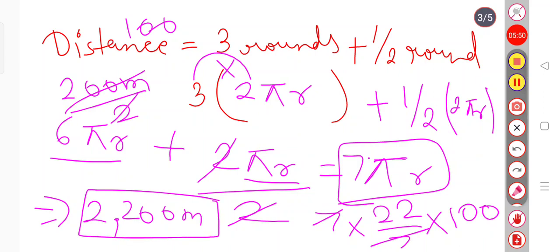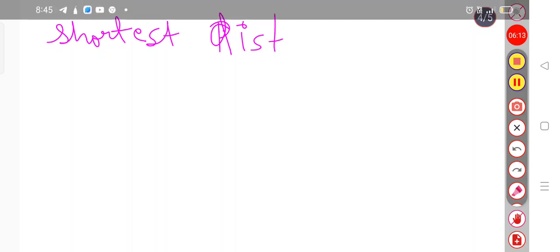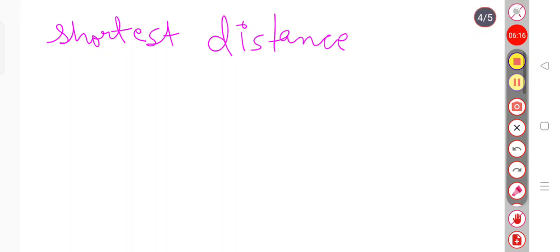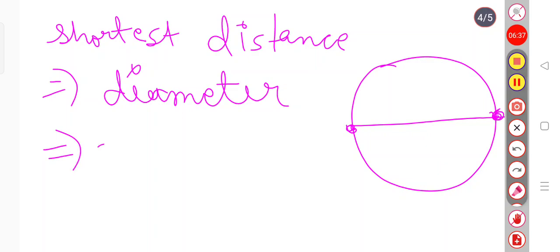So now let's find the displacement, which is really easy and is also mentioned in the question already. Displacement is basically the shortest distance in any path. So the athlete took a circular track round, so the shortest distance between two points is the diameter, that is already given in the question, that is 200 meters. So this is the displacement.